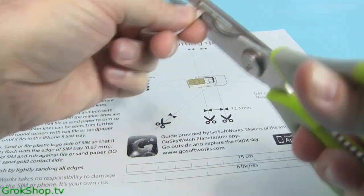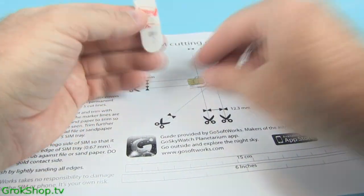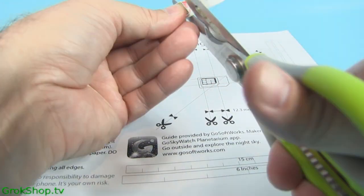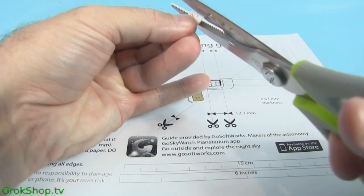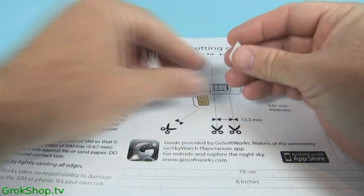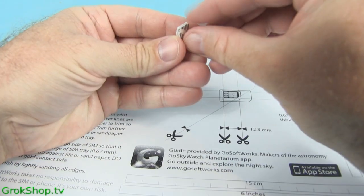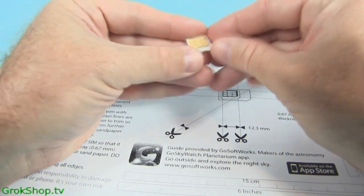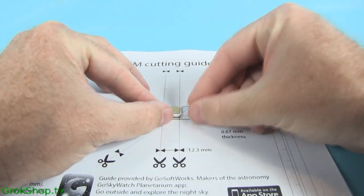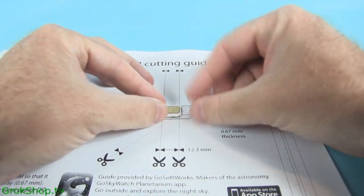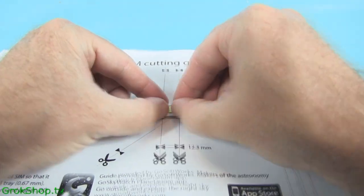Next you need to use some double-sided tape to attach the micro SIM to the template. I use some 3M little wall hanger tape thingies. It really doesn't matter as long as it's stuck on there really good. You want to have the contact side facing up just as shown in the picture there, and make sure that the SIM is positioned exactly within the boundaries shown on the template.